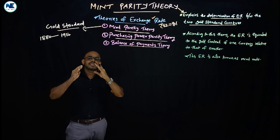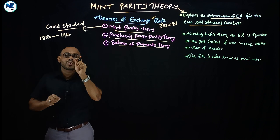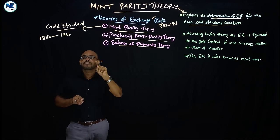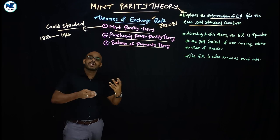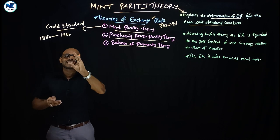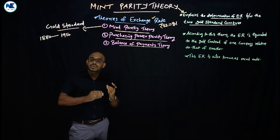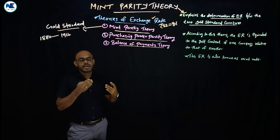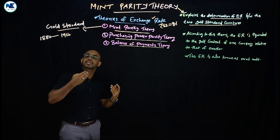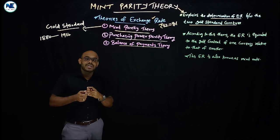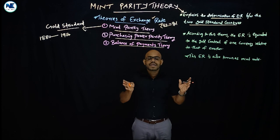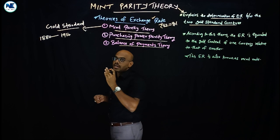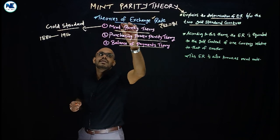Under the gold standard, every country must define the gold content of their currency — that is, declare the pure gold content of one unit of currency. That currency can be converted into gold at any time through the government or central bank. For example, the Bank of England is ready to convert pounds into gold, and the Federal Reserve is ready to convert dollars into gold. Countries following the gold standard determine exchange rates through this mechanism — that is the Mint Parity Theory.